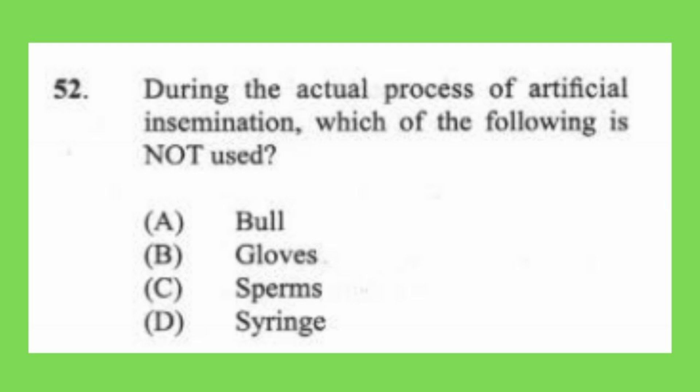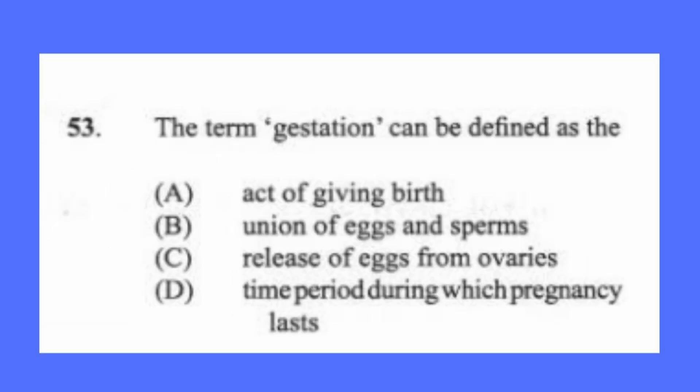Question 52: During the actual process of artificial insemination, which of the following is not used? (a) bull, (b) gloves, (c) sperm, (d) syringe. The answer is A, bull.